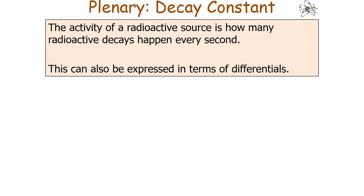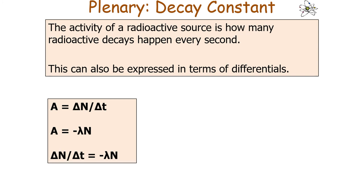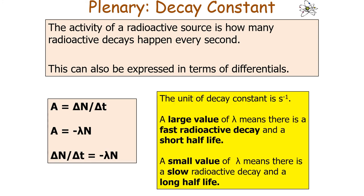Activity can also be expressed as the rate of disintegration: A = ΔN/Δt. Since A = −λN, we can equate these to give ΔN/Δt = −λN. The unit of the decay constant is seconds to the minus one. A large decay constant means fast radioactive decay and a short half-life, whilst a small decay constant means slow radioactive decay and a long half-life. Radioactive decay is an iterative process: the number of nuclei decaying in one time period controls the number available to decay in the next.